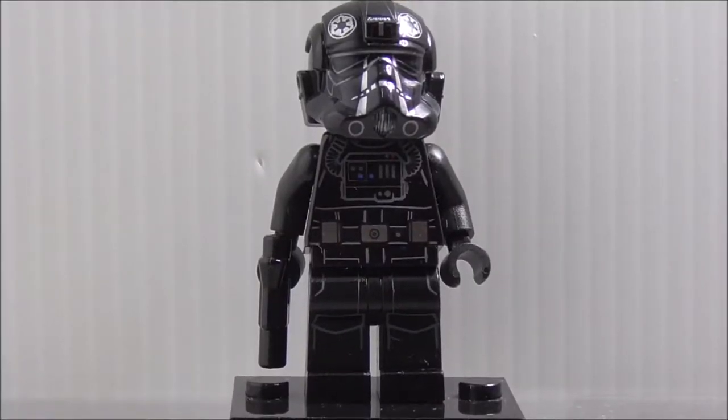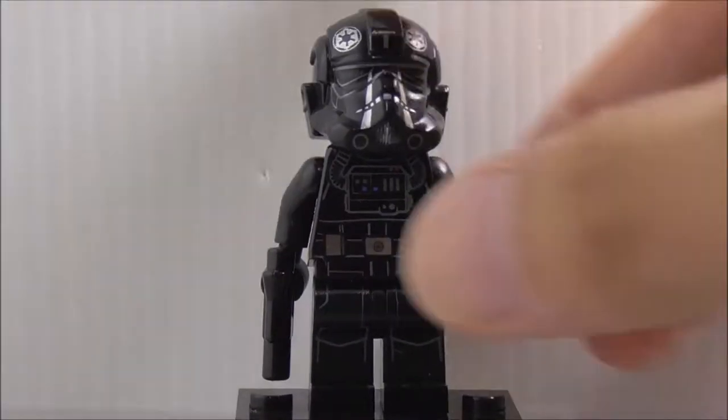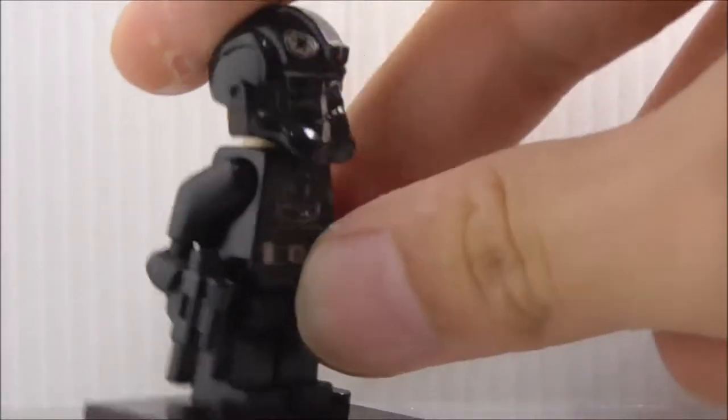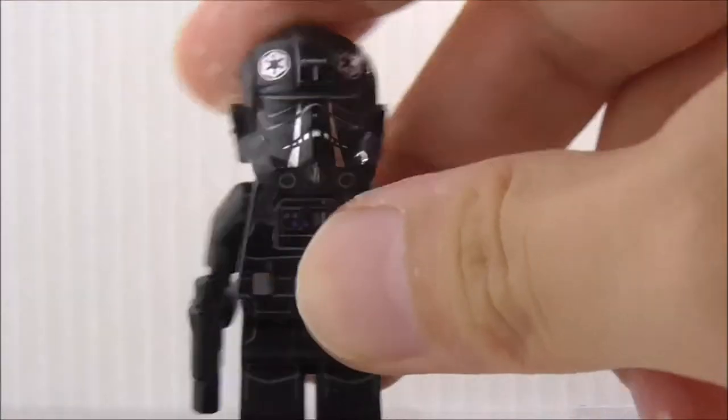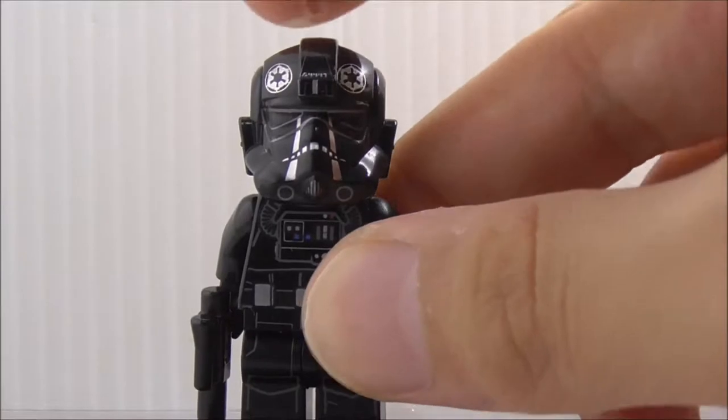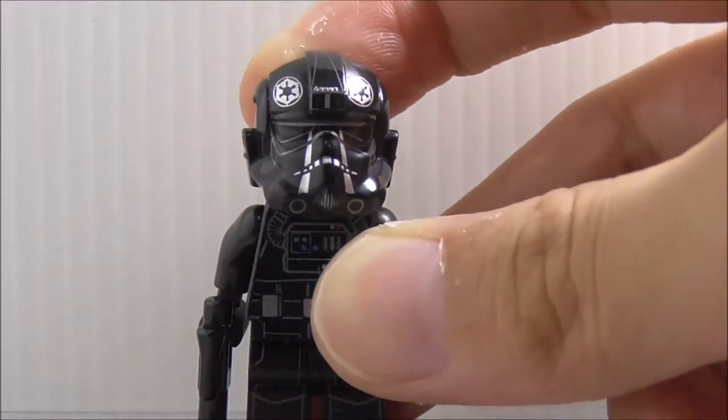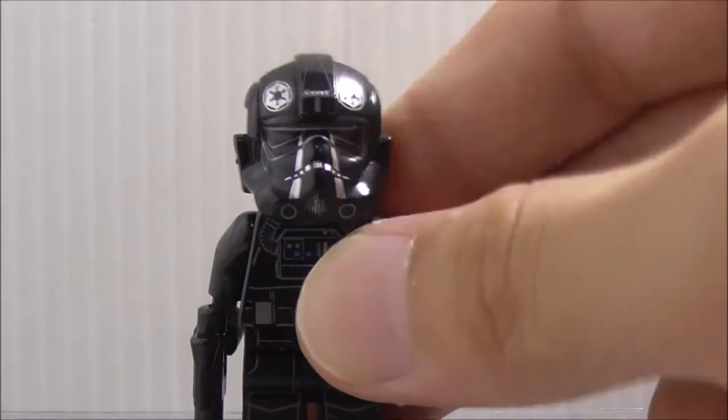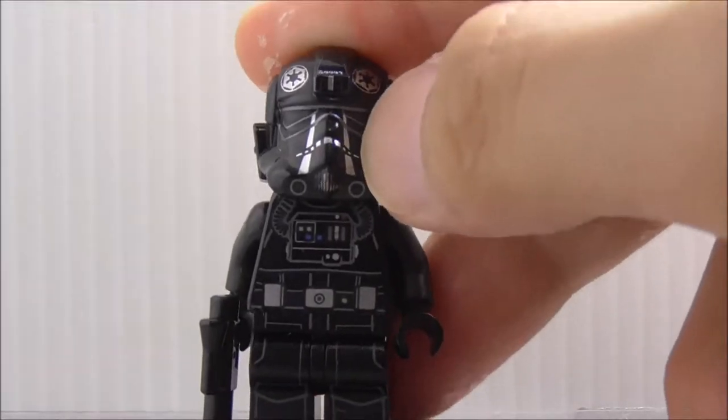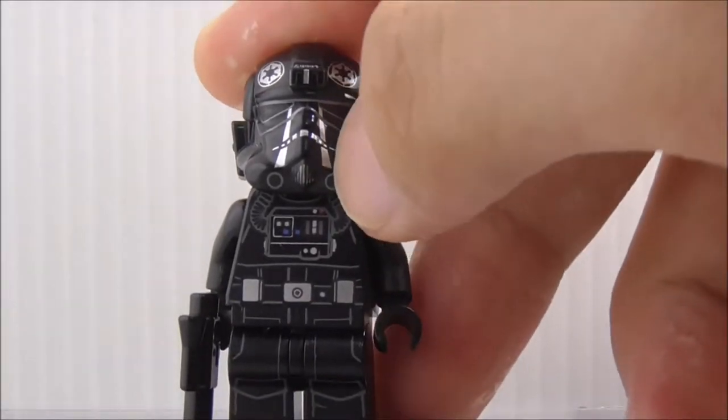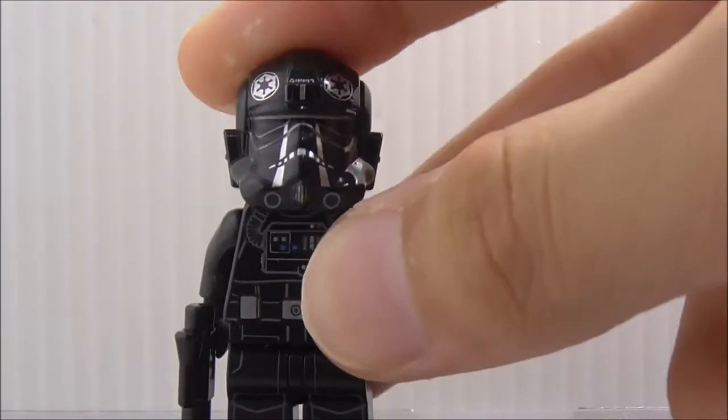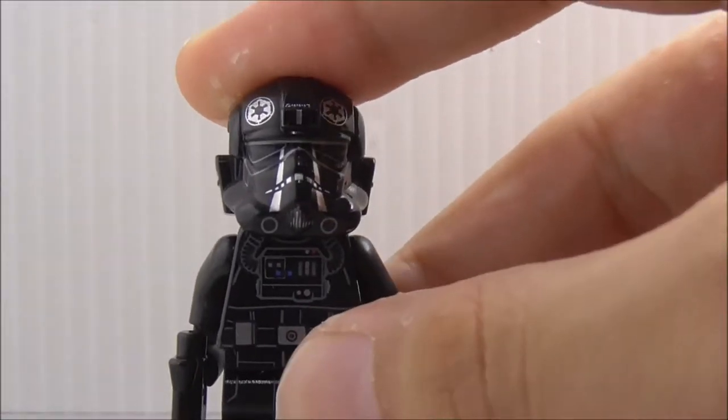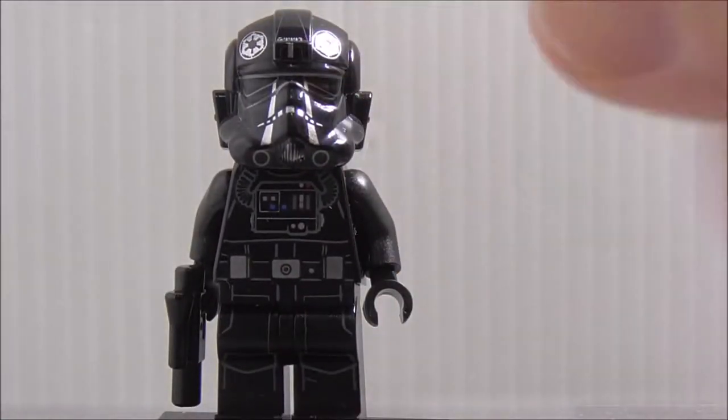This is the TIE fighter pilot here. You can see he is armed with this blaster pistol. His helmet, I'm not sure if it's exclusive or not because this helmet has two silver stripes in the middle. I'm not sure how many sets this comes in.